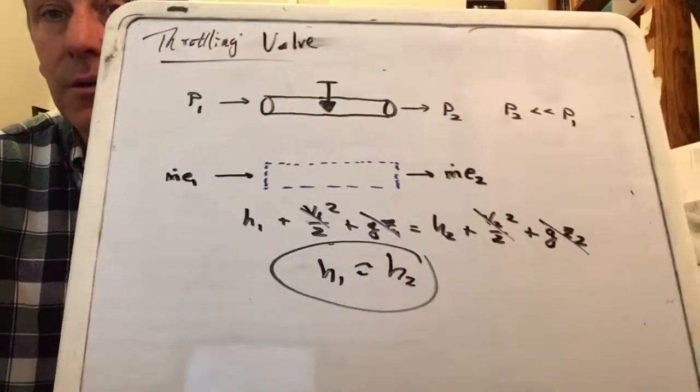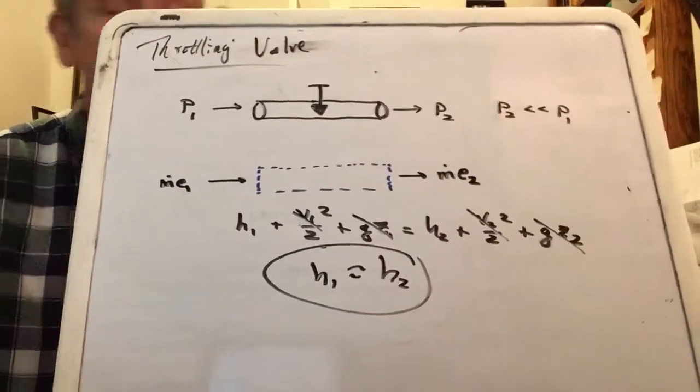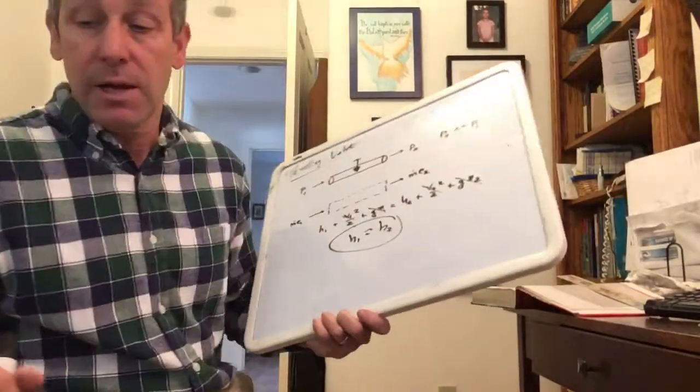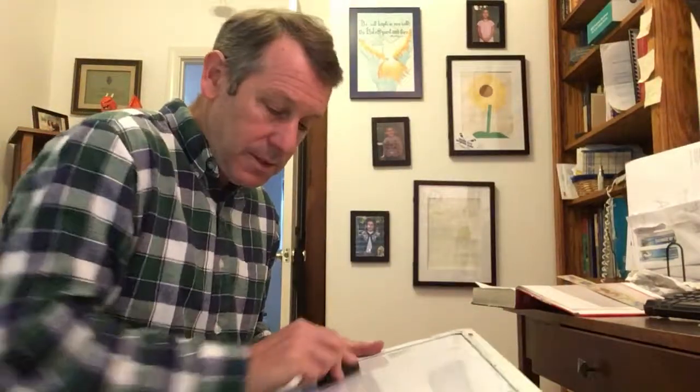It turns out that's useful for problem solving and for understanding what's going on in the refrigeration system. Let me get an example up there. We'll have a throttling valve, I'll give you some conditions, and see if you can work through it using table A-12E.